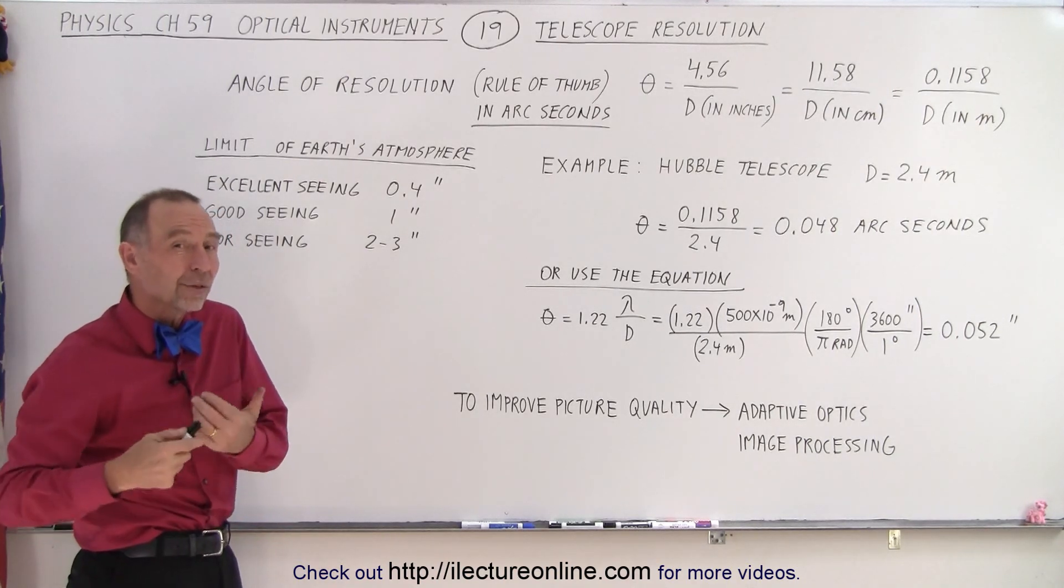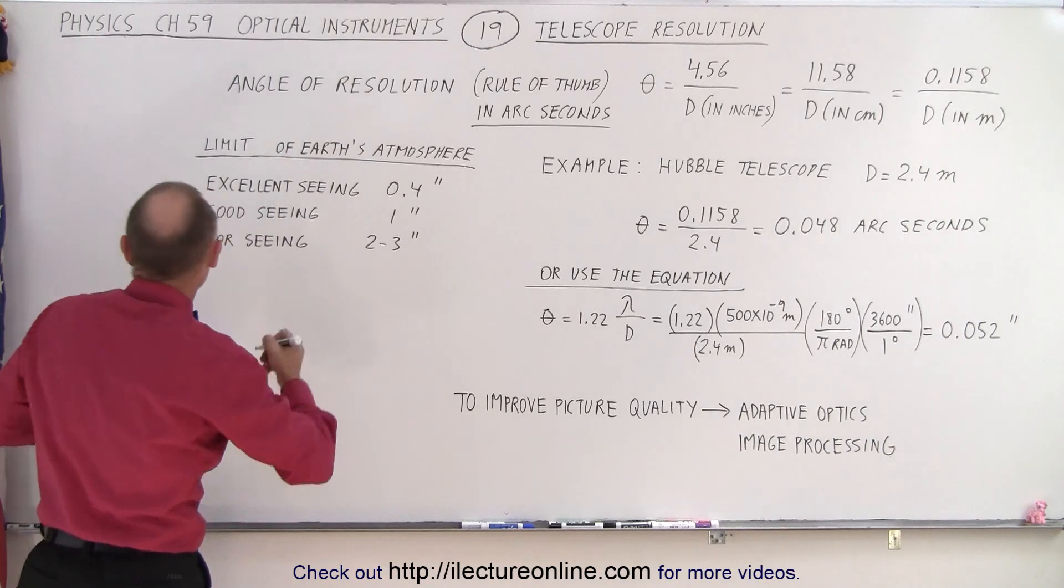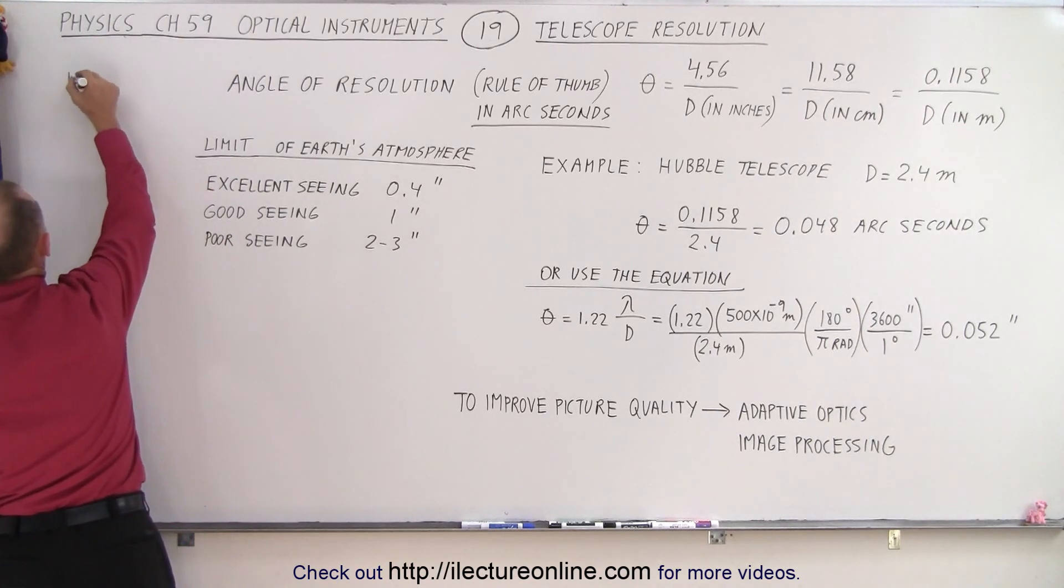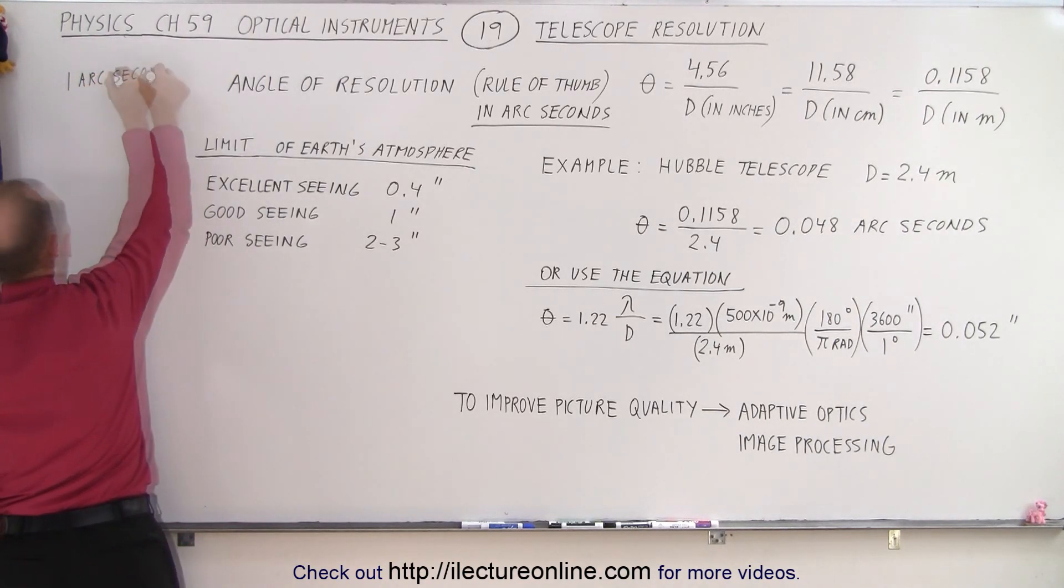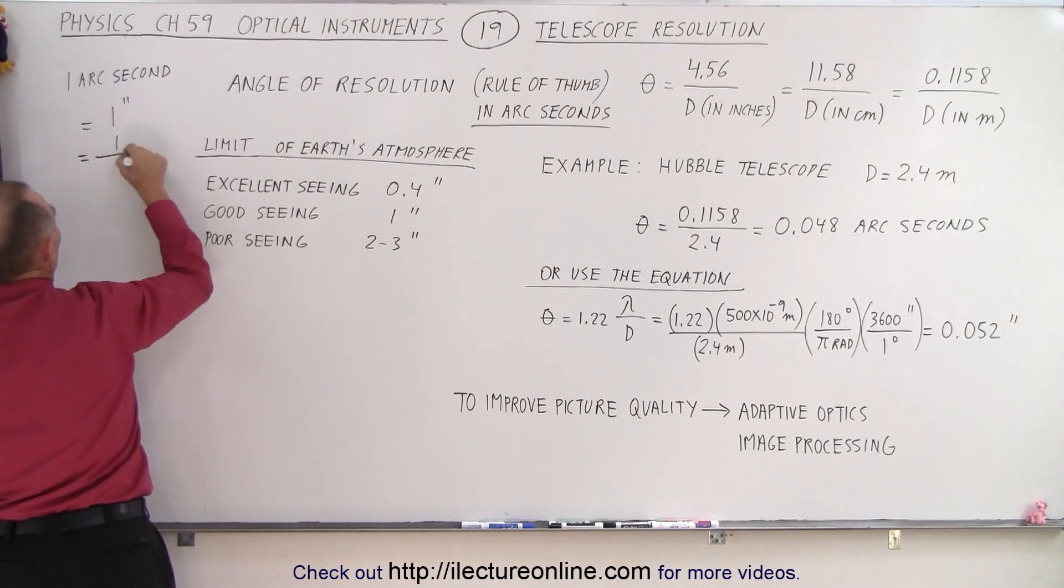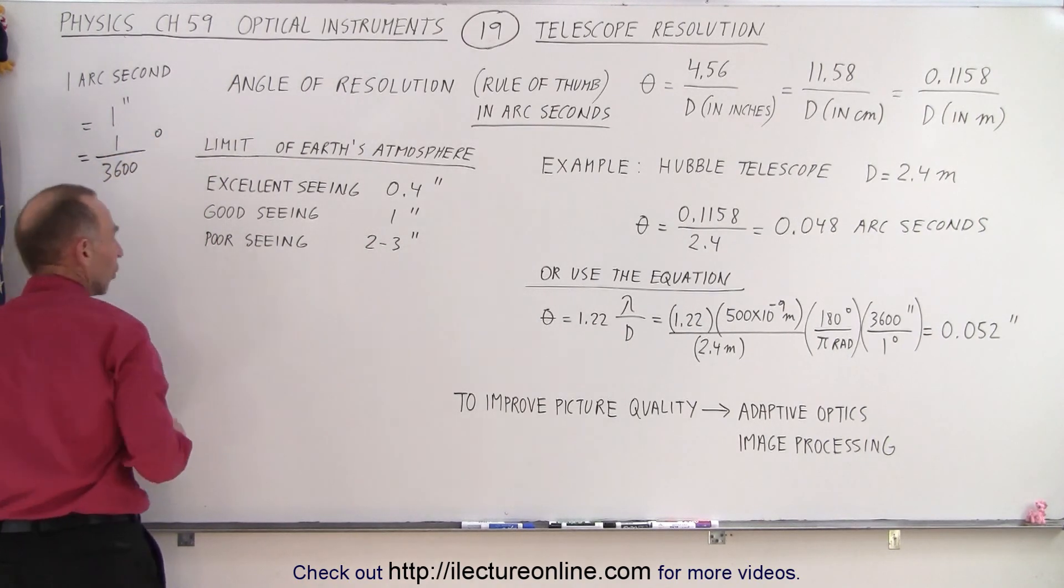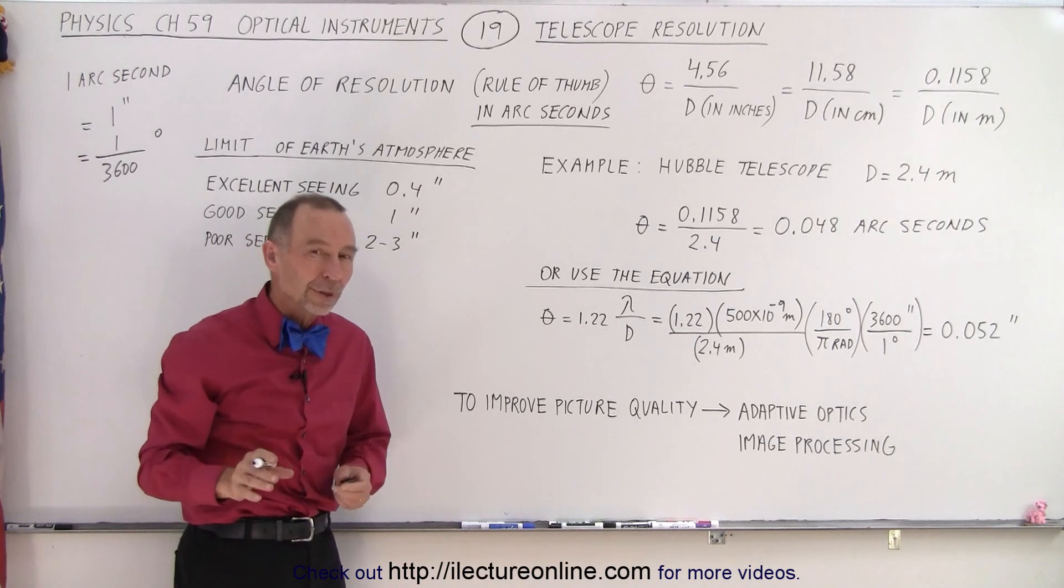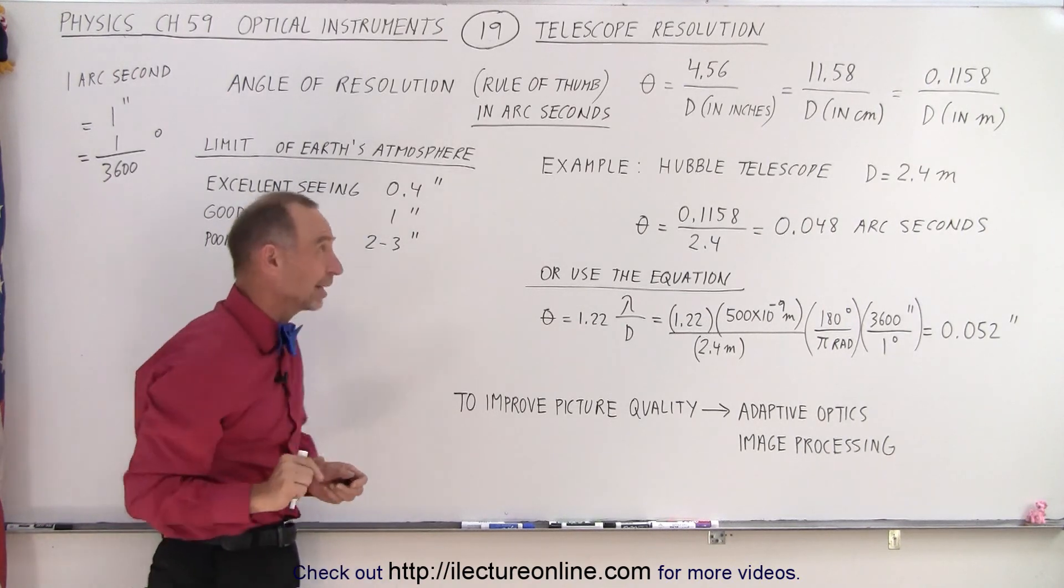And of course, one second of arc is 1/3600 of a degree. I may want to write that down. So, one arc second, which can be written as one with the two little hash marks like that, that's an arc second, is equal to 1 over 3,600 of a degree. So, it's a very tiny little angle.